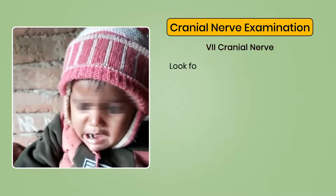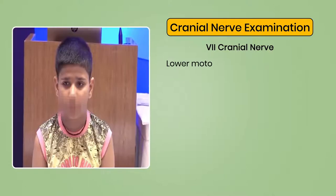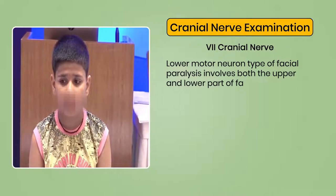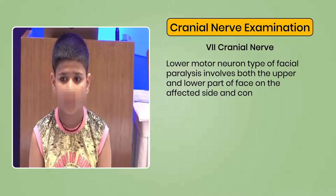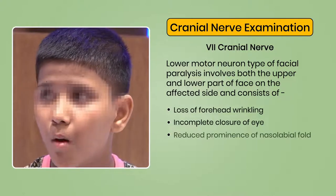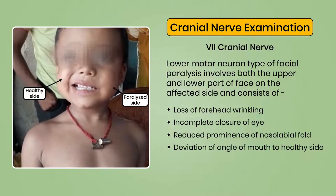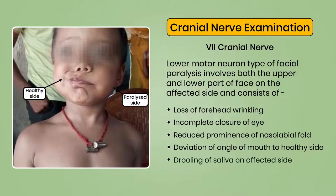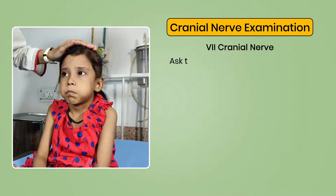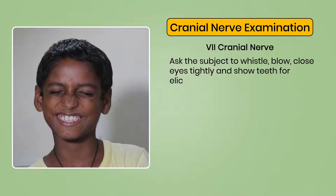7th cranial nerve: look for facial asymmetry, especially in a crying or smiling child. Lower motor neuron type of facial paralysis involves both the upper and lower parts of the face on the affected side, consisting of loss of forehead wrinkling, incomplete closure of the eye, reduced prominence of the nasolabial fold, deviation of the angle of mouth to the healthy side, drooling of saliva on the affected side, and inability to blow air or whistle from the affected side. Ask the subject to whistle, blow, close eyes tightly, and show teeth to elicit these signs.